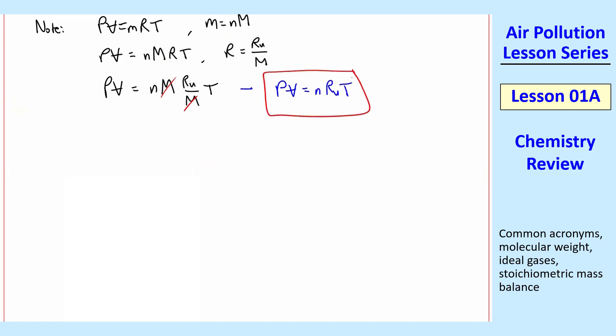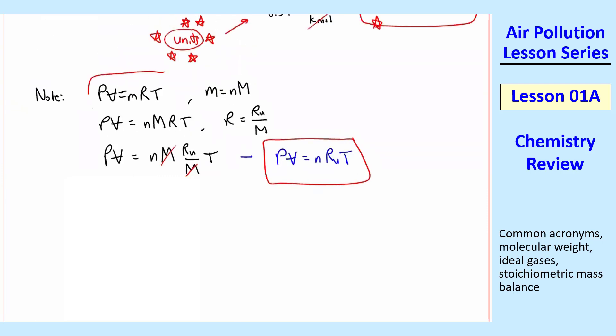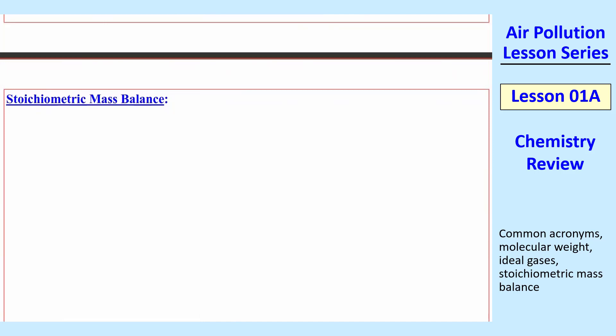So these are both valid expressions of the ideal gas law. And I had written both of those at the beginning of this section. Stoichiometric mass balance. This is again a quick review of chemistry. So I'll just do a very easy example here. The basic statement of this is that mass must be conserved for each element in any kind of chemical reaction.